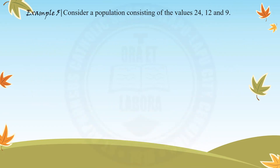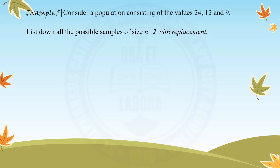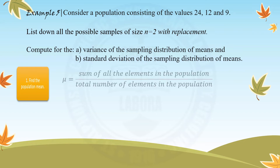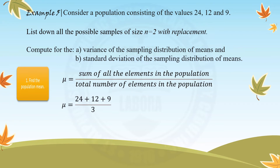For this example, consider a population consisting of the values 24, 12, and 9. List down all possible samples of size n = 2 with replacement, and compute the variance and standard deviation of the sampling distribution of means. Step 1: find the population mean. Using the formula — sum of all elements over total number of elements — we substitute 24, 12, and 9, add them, and divide by 3. The result is 15. Therefore, the population mean is 15.